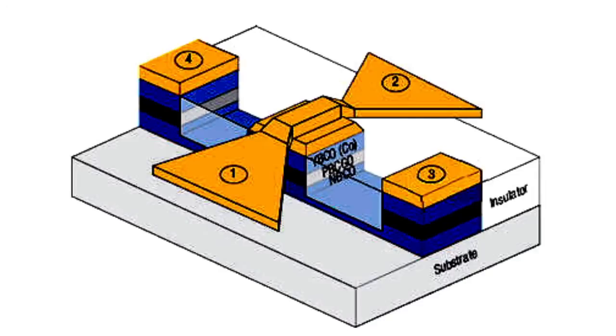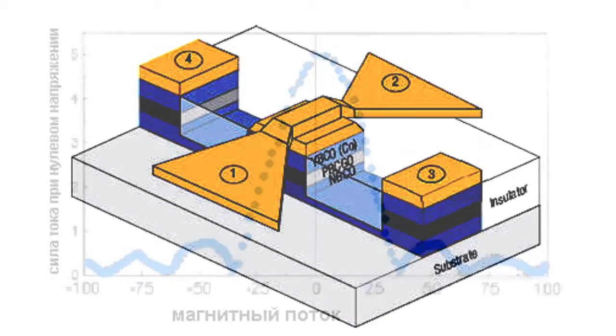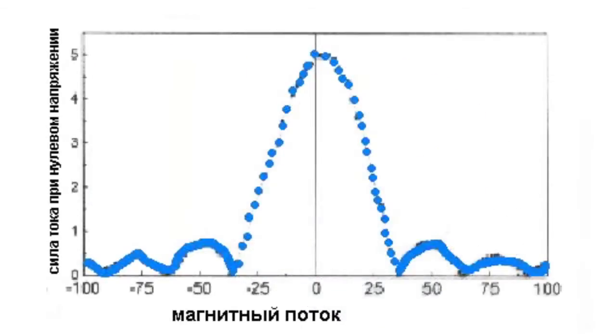At the same time, such an element is a highly sensitive magnetic field sensor, as under the influence of magnetic fields the junction current increases sharply. You can see that on the diagram.